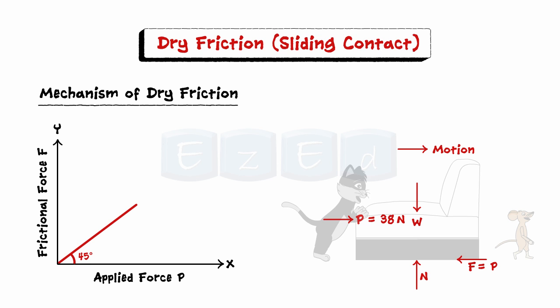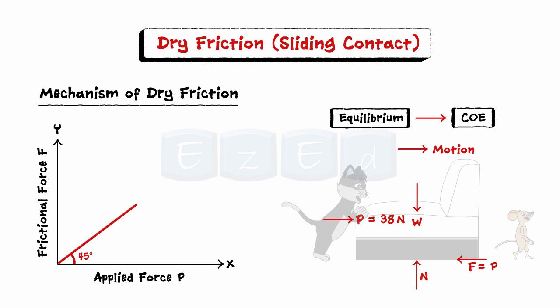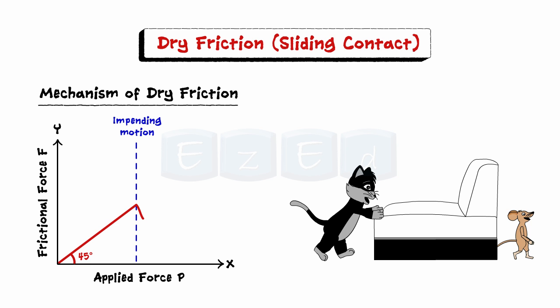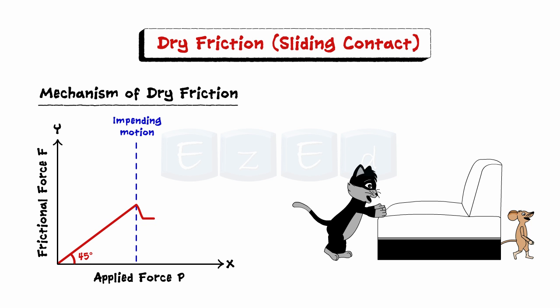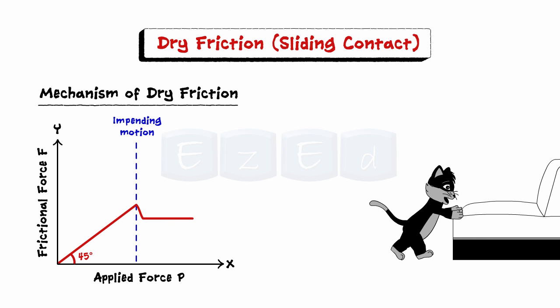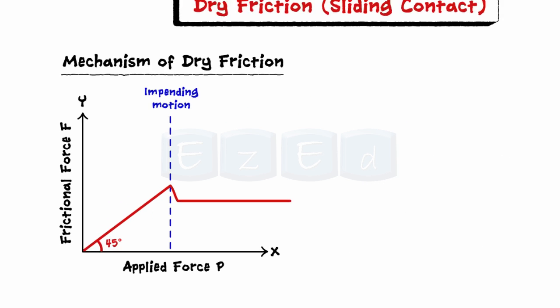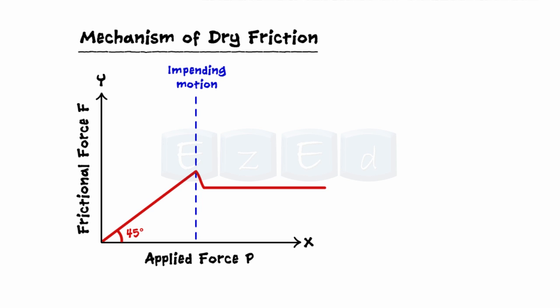During this period, the sofa is in equilibrium and all forces acting on the sofa must satisfy the equilibrium equations. Finally, we reach a value of P which causes the sofa to slip and to move in the direction of the applied force. At this same time, the friction force decreases slightly and abruptly, then remains essentially constant as the applied force increases.